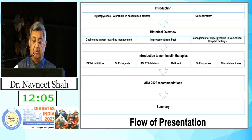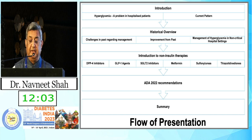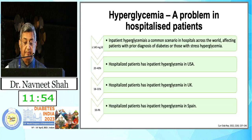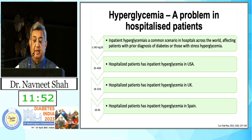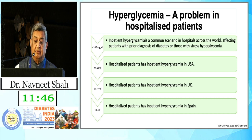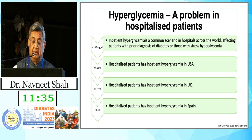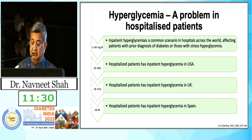This talk will cover the hyperglycemia problem, a historical overview, and introduction of non-insulin therapy. Inpatient hyperglycemia is a common scenario in hospitals across the world: 20 to 40% of hospitalized patients have inpatient hyperglycemia in the USA, almost 18 to 31% in the UK, and 18% in Spain.